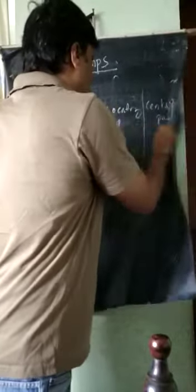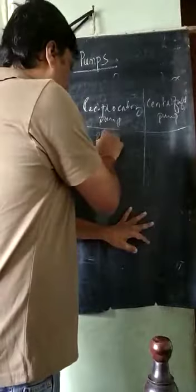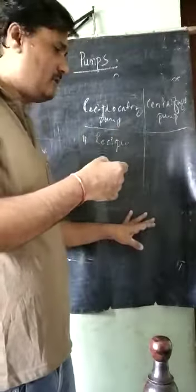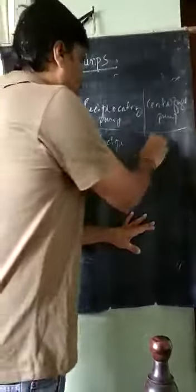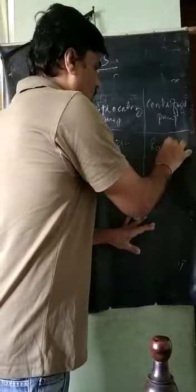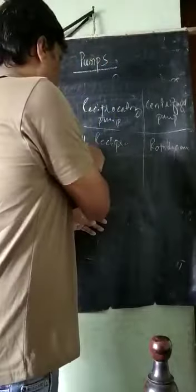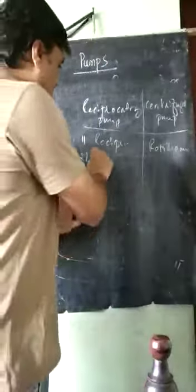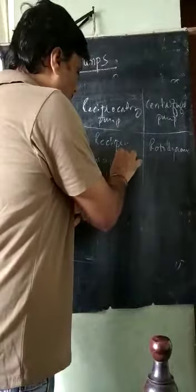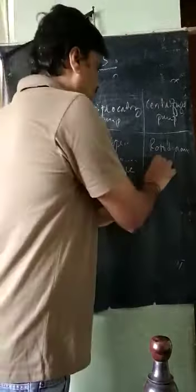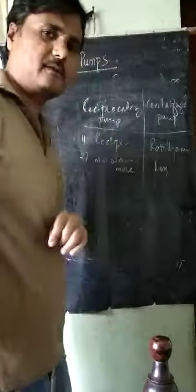Comparison: First, the reciprocating pump has reciprocating action - moving to and fro in a straight line. The centrifugal pump has roto-dynamic action. Second, the reciprocating pump has more maintenance because it has more moving parts, whereas the centrifugal pump requires less maintenance.